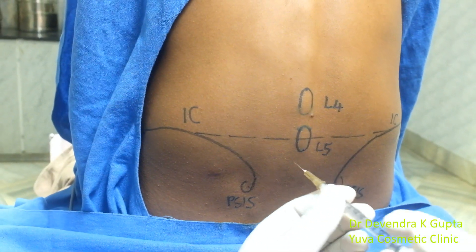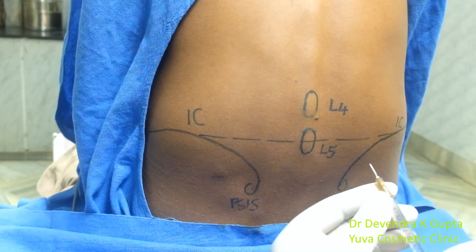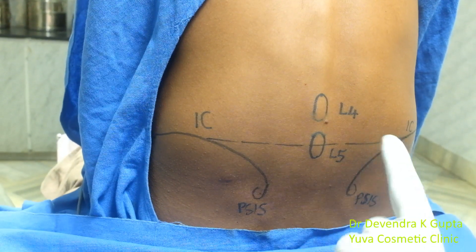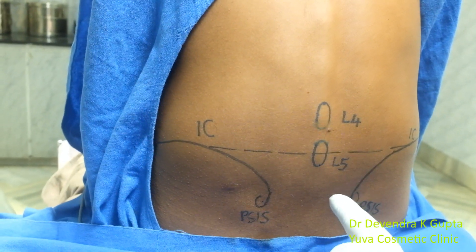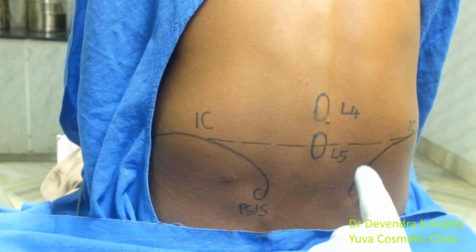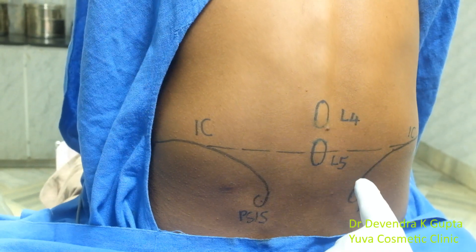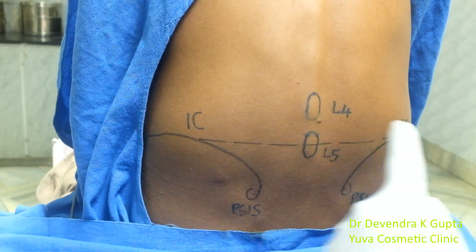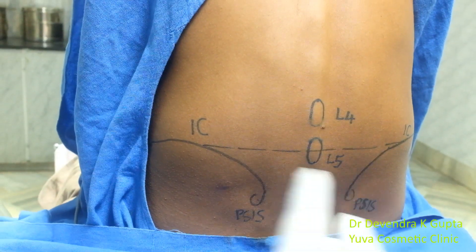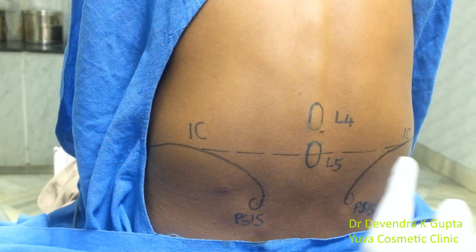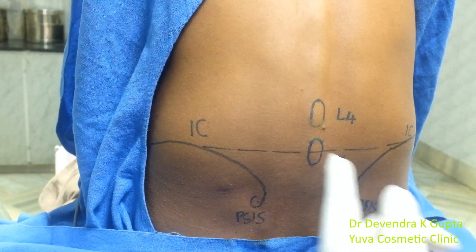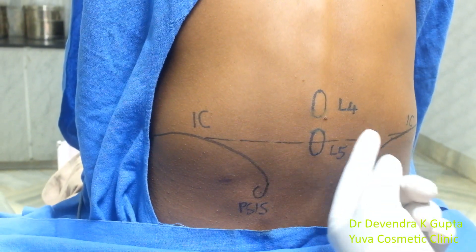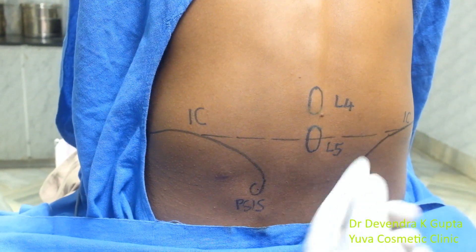I have taken a 26-gauge needle and initially anesthetize the space between L4 and L5. I have already marked the top of the iliac crest here. Using Tuffier's line, I have drawn a line between the two iliac crests that passes through L5, and I have selected the space between L4 and L5.